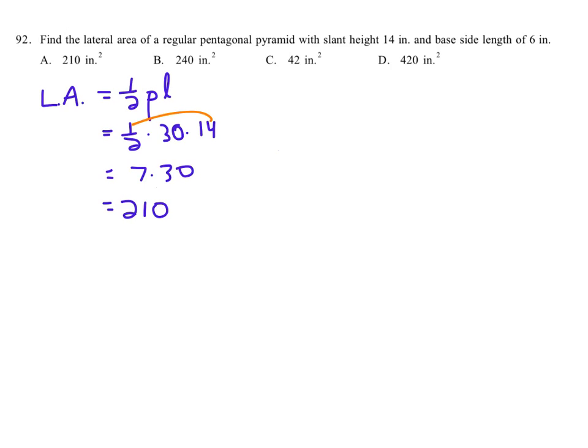And do we see that as a choice? We do. We see that as choice A. And of course, we should have units on it, and the units were given to us in inches, so we've got its area inches squared.